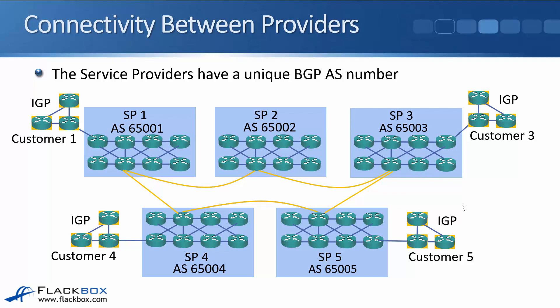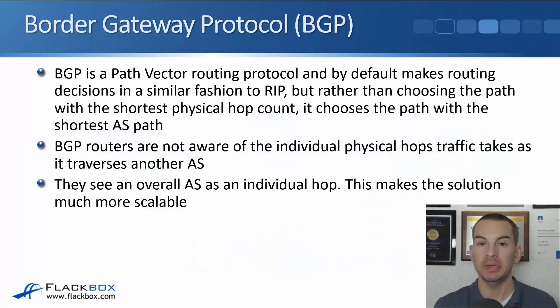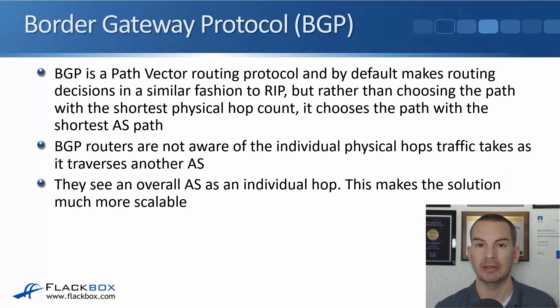Each of the service providers will be assigned a unique AS number that is assigned through the internet authorities like IANA. Each of them has an individual unique AS, and that AS number is going to be used to control the routing of internet traffic between them.